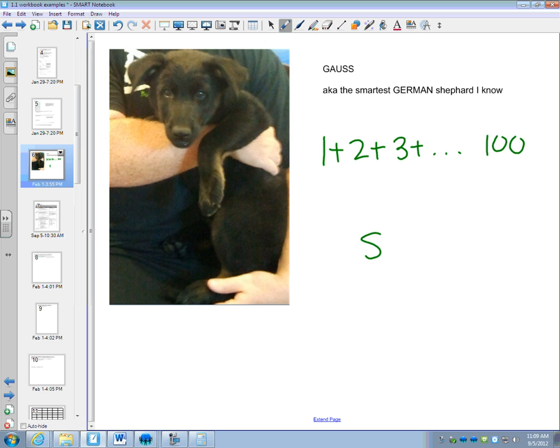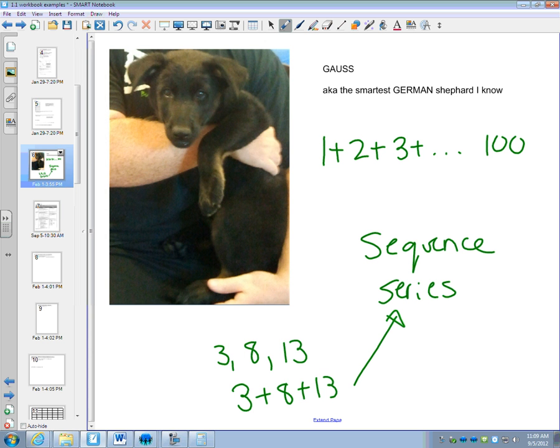So adding up a sequence is called a series. So if we had 3, 8, 13, that is a sequence with a common difference of 5, but if we want to know what 3 plus 8 plus 13 is, now that is called a series. So it's like we replace the commas with plus signs.